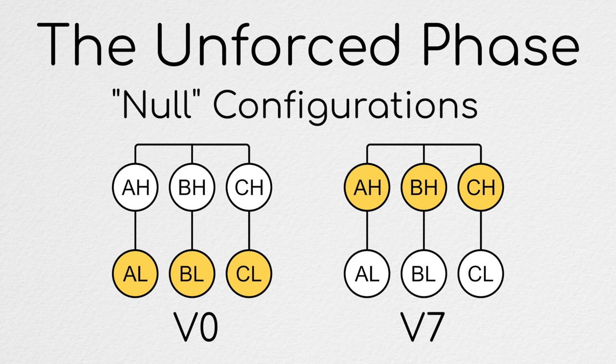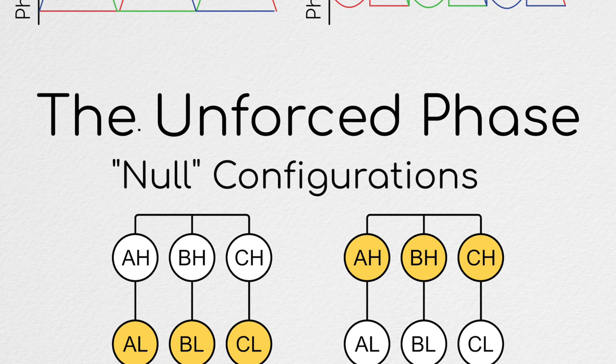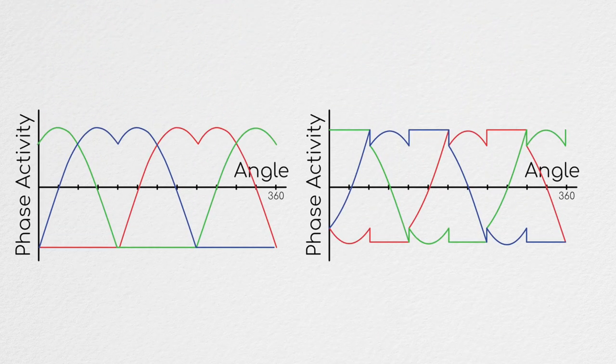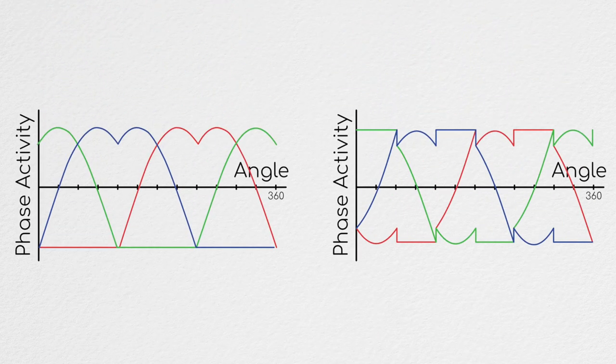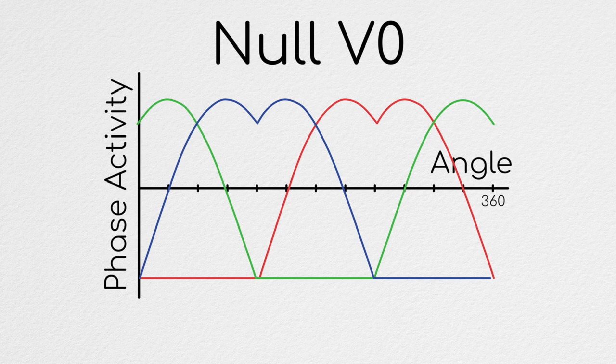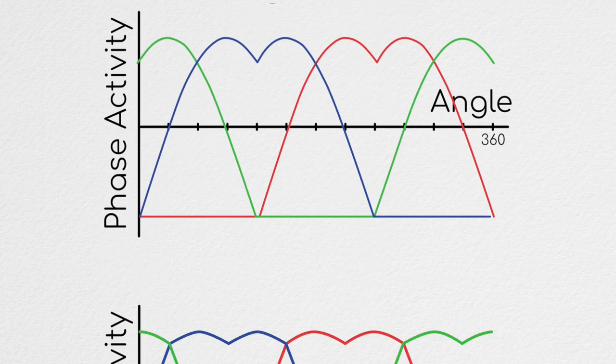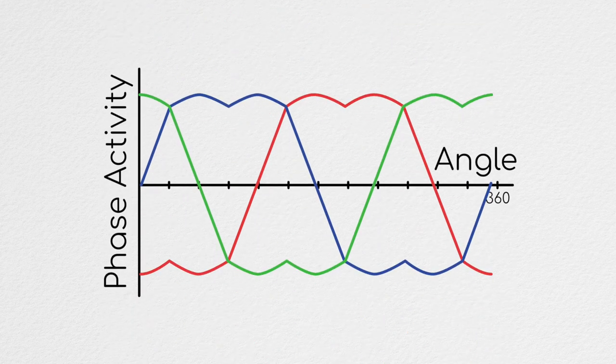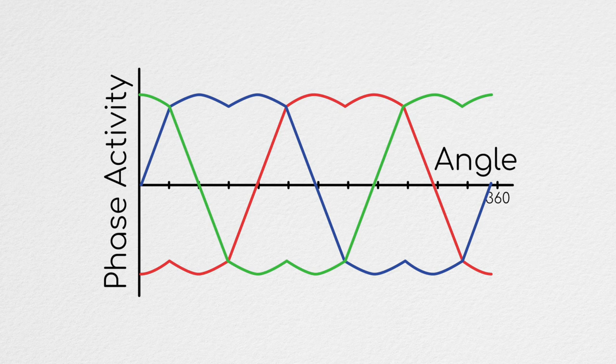But when do we use configuration 0 and when do we use configuration 7? Well, the answer to this is determined by which space vector modulation pattern you choose. For instance, the null v0 pattern, which is generally regarded as the best choice if you're trying to minimize your switching losses, always uses configuration 0 during the whole of its unforced phase. The alternate reverse sequence which we introduced last episode, which has less harmonic distortion, uses both, evenly splitting its unforced phase between the two.